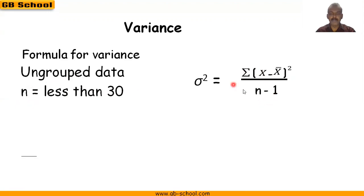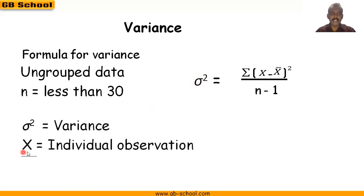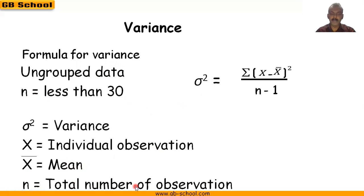This is the formula for variance for ungrouped data when sample size is less than 30. Here, σ² is variance, x is individual observations, x-bar is the mean, and n is the total number of observations.